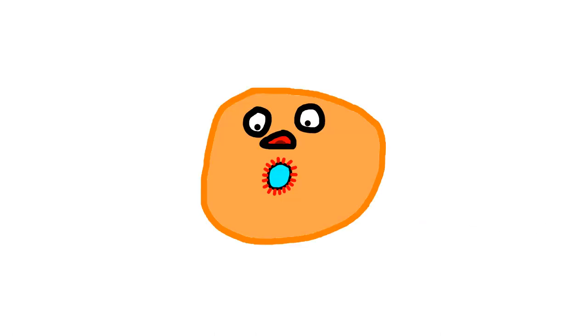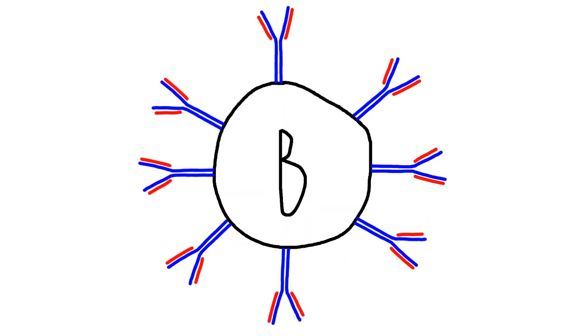There are two basic types of responses, depending on whether the pathogen lives inside or outside of your cells. For pathogens outside of your cells, B-cells are the main cell recruited by the helper T-cell.